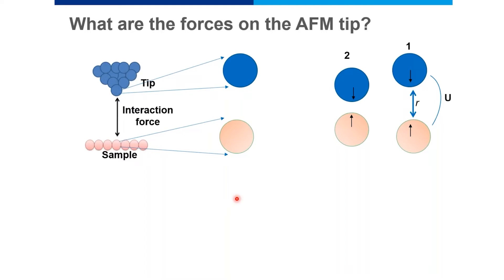If we bring the atoms still closer together — at point number three, where the atoms are now very close — they will experience a repulsive force, and their bonding potential energy rapidly increases. We can model these interactions using the Lennard-Jones potential. At point one, atoms are far apart; as they come closer, their long-range attractive forces increase and bonding potential energy decreases. At point two, they are under long-range attractive forces. At point three, the repulsive forces dominate.